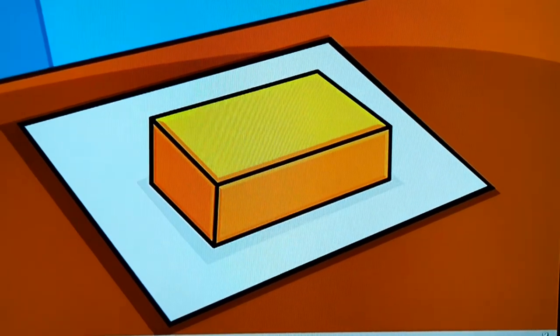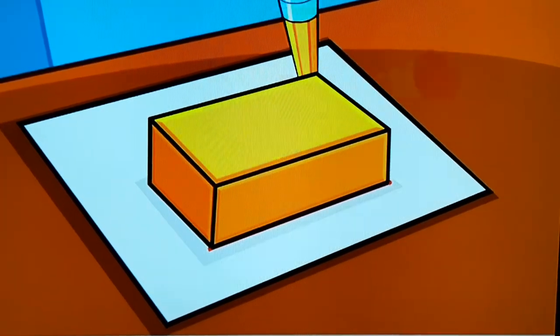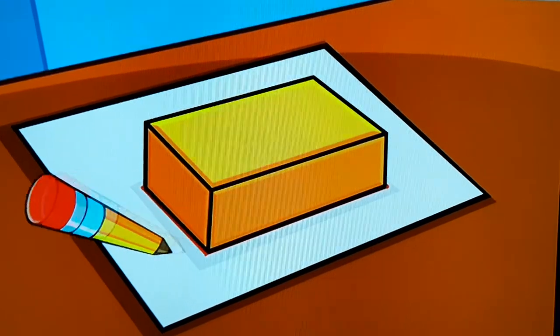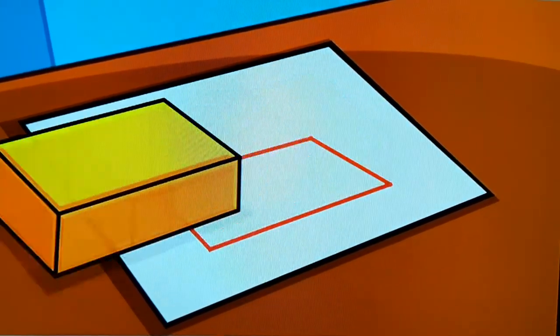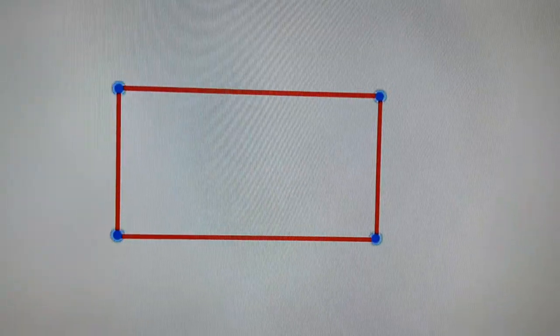To find the outline of an object, keep it on a paper and move your pencil along its borders. See how we can find the shape of this brick. We see that the outline of a brick is a rectangle.